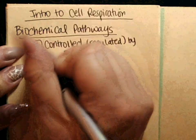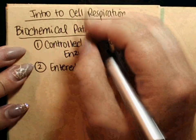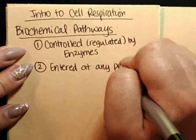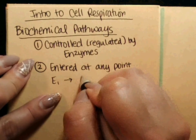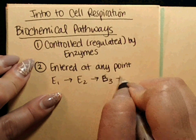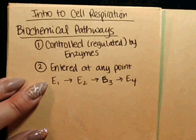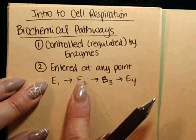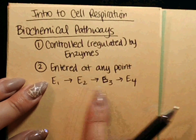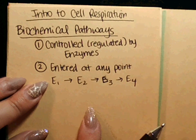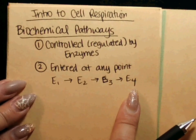The second thing to remember about biochemical pathways is that they can be entered at any point within the pathway. For example, if you have enzyme one making a product that goes to enzyme two, then three, then four, and you suddenly have an influx of the product from enzyme two, the pathway will continue moving forward from that point — it won't be converted back to the substrate for enzyme one.